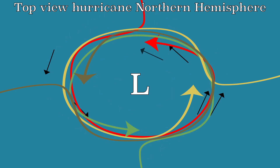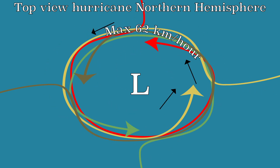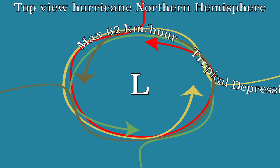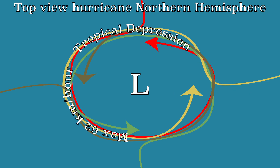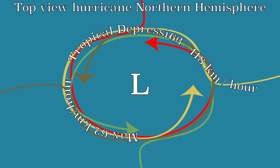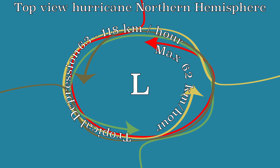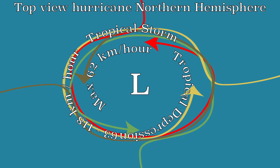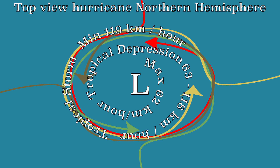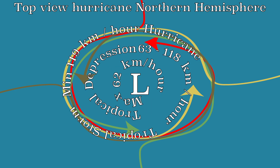The wind speed increases. When a wind speed is up to 62 km per hour, it is called a tropical depression. Wind speeds of 63 to 118 km per hour are called a tropical storm. When a wind speed exceeds 119 km per hour, it is called a hurricane.